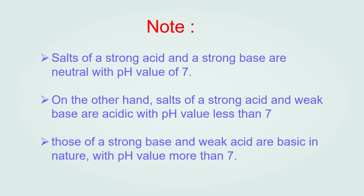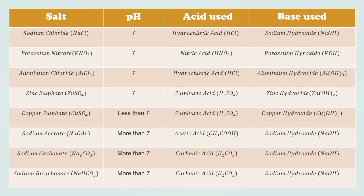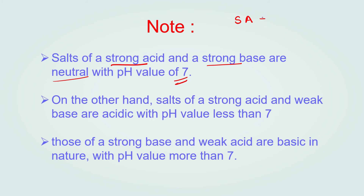Here are some important points for MCQs. Salt of a strong acid and a strong base is neutral with a pH value of 7. For example, hydrochloric acid is a strong acid and sodium hydroxide is a strong base; their salt, sodium chloride, is a neutral salt with pH 7. Strong acid plus strong base gives a salt of neutral nature.